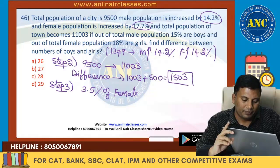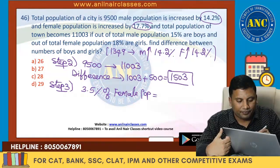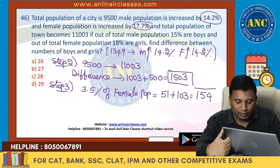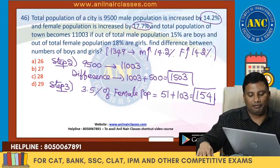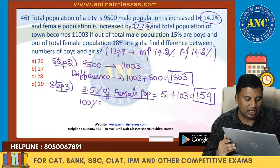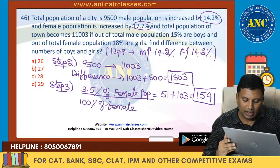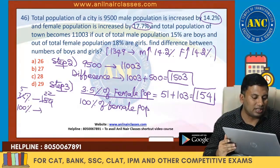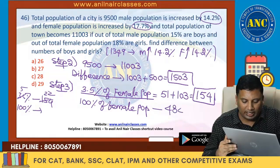3.5% of female population equals 154. So female population equals 154 times 100 divided by 3.5. That gives us: 35 percentage is giving 154, so 100 percentage — total female population — is 4840.